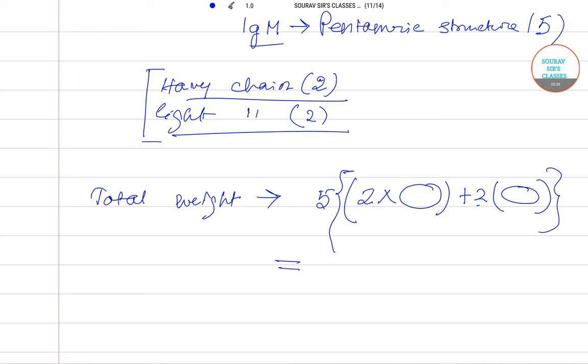So now we can put the values that we have: that is 2 times 65,000 plus 2 times 25,000, all multiplied by 5.